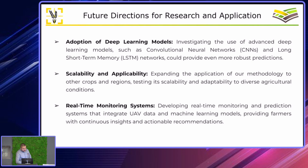Looking at future directions — one area is the adoption of deep learning models, such as convolutional neural networks or long short-term memory networks, though we would need much more data for that. In terms of scalability, we could expand the methodology to other crops, though that's not straightforward — you cannot directly apply a model built for wheat to corn, because corn biomass doesn't correlate with yield in the same way.